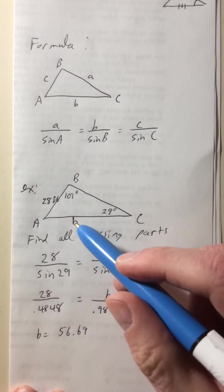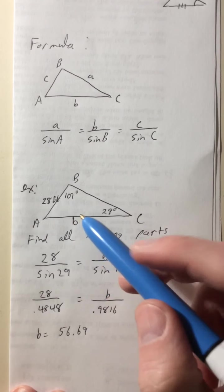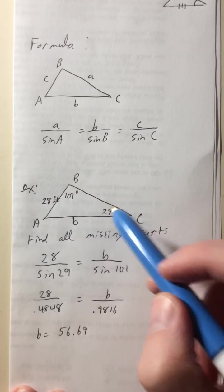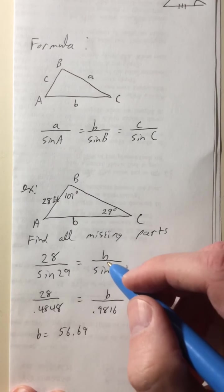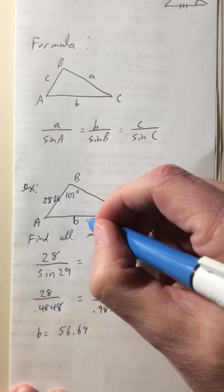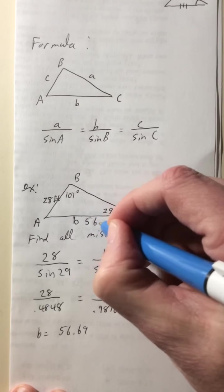So B equals 56.69. And that makes sense, because it's across from a bigger angle. It should be bigger than that side right there, which is across from a smaller angle. Okay, so now we got this side right here, which is 56.69.